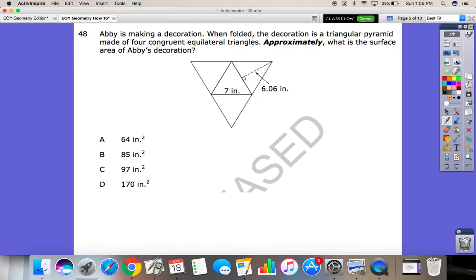Abby's making a decoration. When folded, the decoration is a triangular pyramid made of four congruent equilateral triangles. Approximately, what is the surface area of Abby's decoration? So again, we're doing area. It's surface area, because if you fold this up, you get a 3D shape. What's important here, it says four congruent equilateral triangles. So congruent means the same, and equilateral means equal. So that means all the sides are equal, all the triangles are equal, everything is the same. So these two measurements alone is enough to get us there. Quick reminder that for area of a triangle, we're going to do half the base times height, or base times height divided by 2, whichever you prefer. I'm going to do the divided by 2.